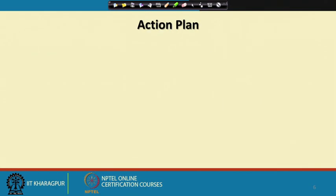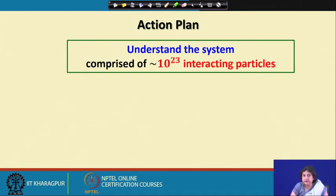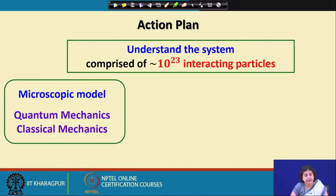The action plan to address this very complex, difficult set of questions is: we need to understand the system we are interested in. The kind of systems we are talking about are very complex — they are comprised of typically 10^23 particles which are interacting with each other. Therefore, a microscopic model of this system would require us to use the language of quantum mechanics. You are aware that you cannot solve quantum mechanical equations like the Schrödinger equation to know the complete information regarding the microscopic properties of the system. Therefore, it is sometimes useful to use a model of microscopic states from classical mechanics.